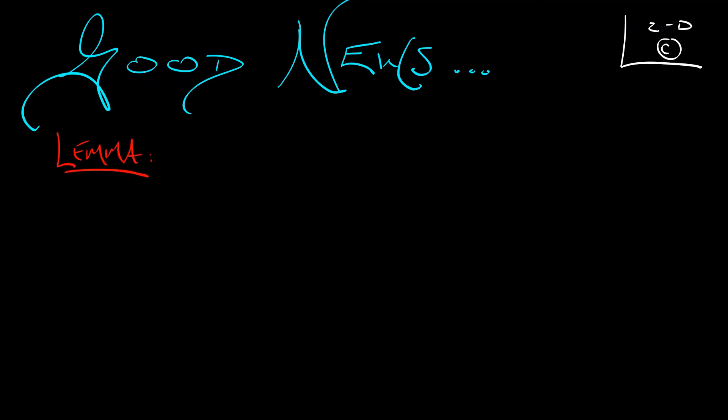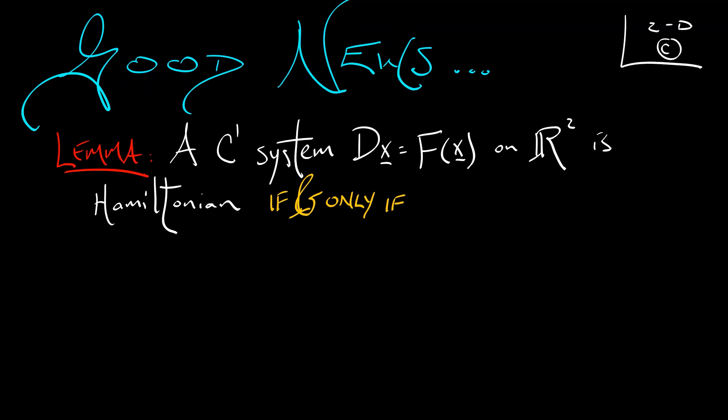Here's a lemma. A continuously differentiable system, dx equals f of x on the full plane, is Hamiltonian if and only if the divergence of that right-hand side vanishes. That's pretty cool because that's easy to check.